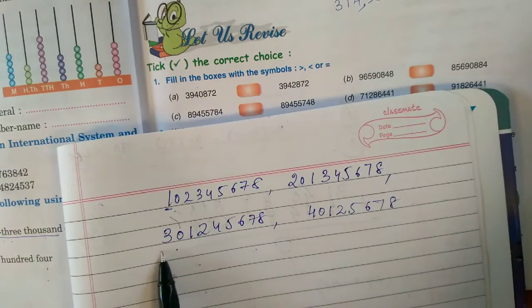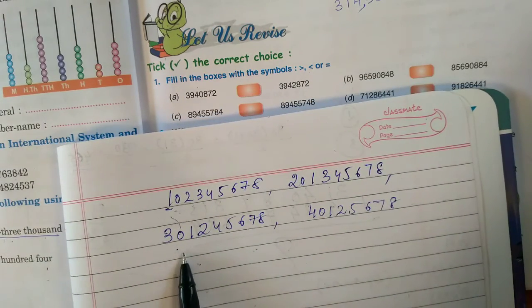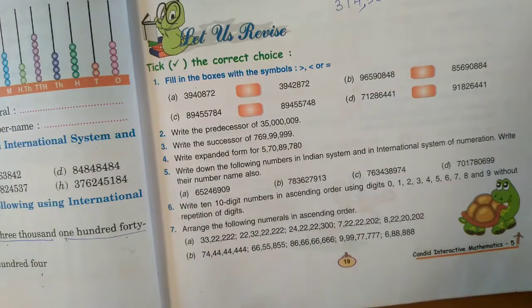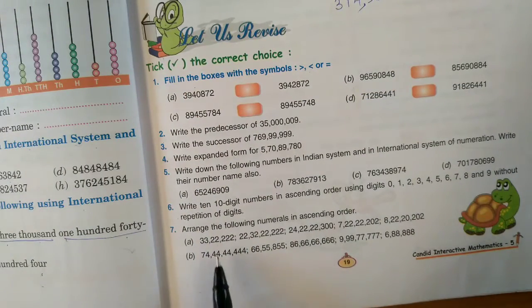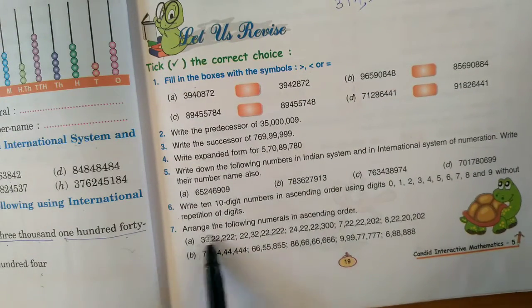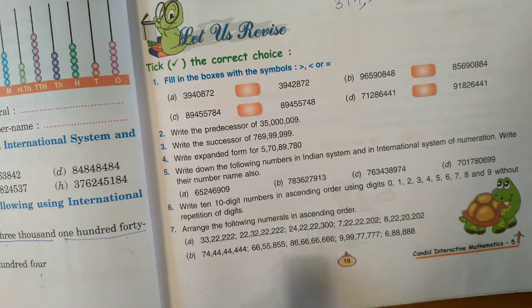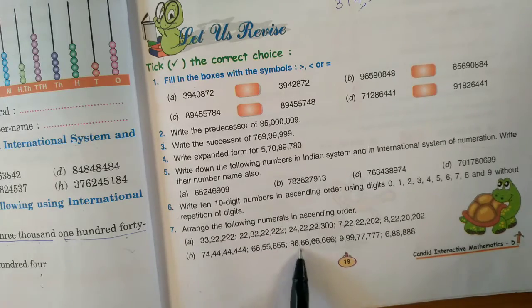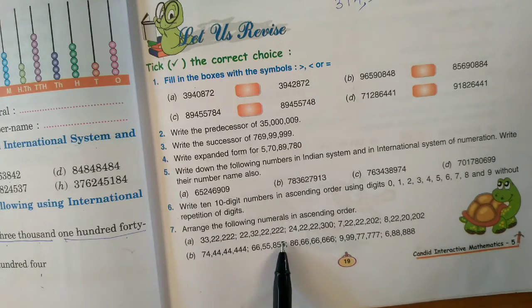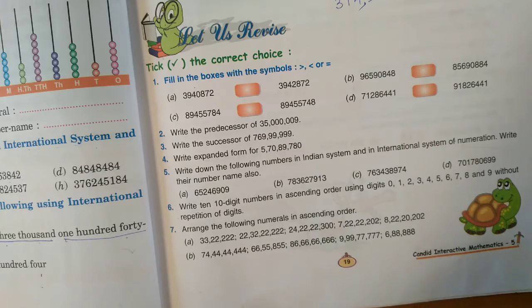We will start with 9 last — that will be the last number. Don't put any comma in between the numbers. To arrange numbers in ascending order, first count the digits to see which is the smallest and which is the biggest.